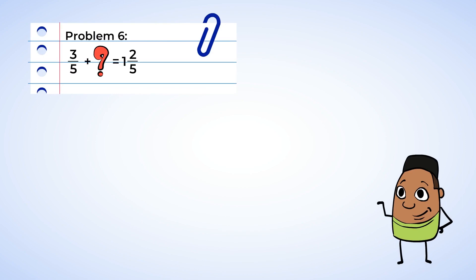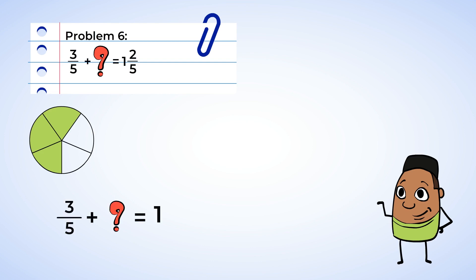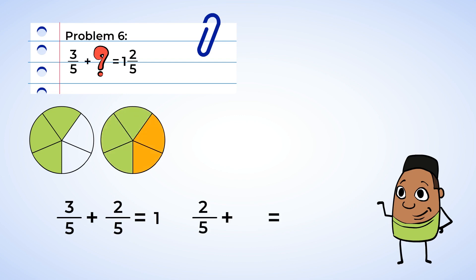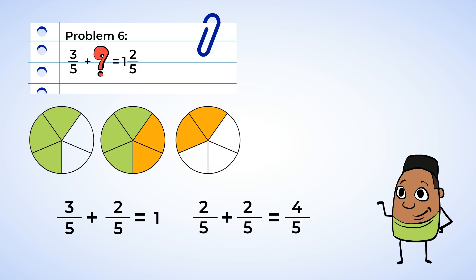Three-fifths plus what is equal to one and two-fifths? Visuals are going to help us out. Starting with three-fifths, how many more do we need to shade in to make one whole? That's two more fifths to get to a whole. And then we need to add two more fifths to get to one and two-fifths. Two-fifths plus two-fifths is four-fifths. We need to add four-fifths.